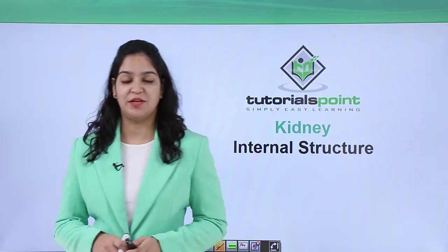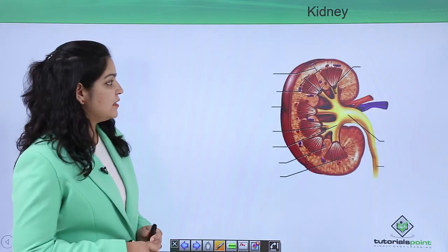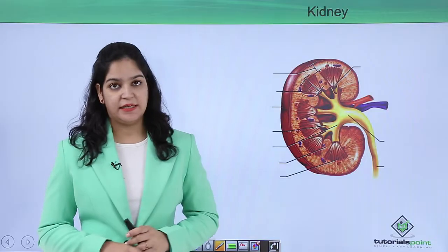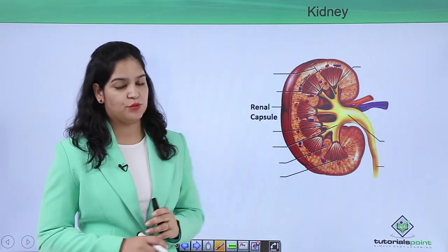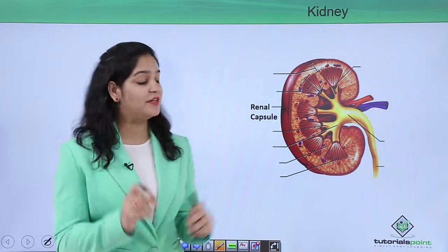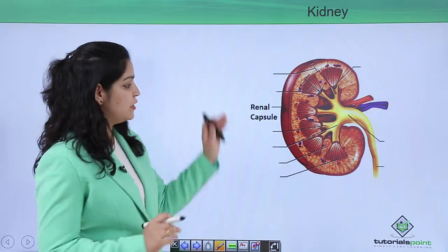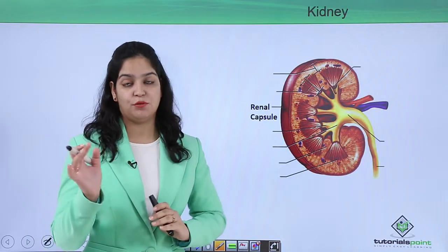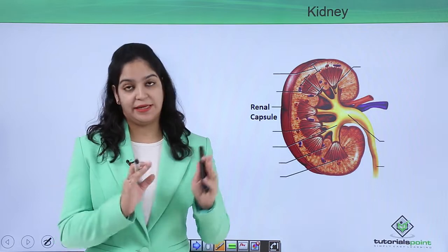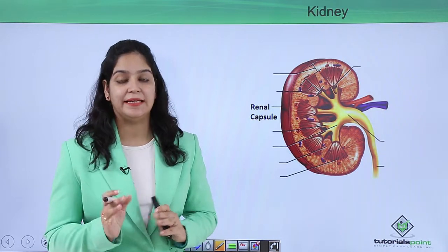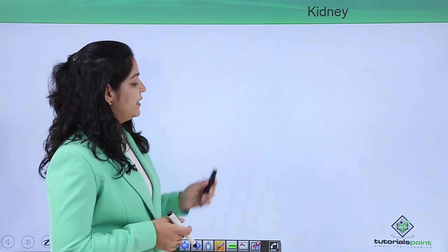Hello guys, today we are going to learn about the kidneys — the internal structure of the kidney. The outer covering of the kidney is called the renal capsule. Wherever the term 'renal' comes, it means something related to the kidney. The renal capsule is a covering which protects the kidney against any infection or injury.